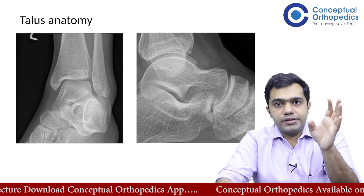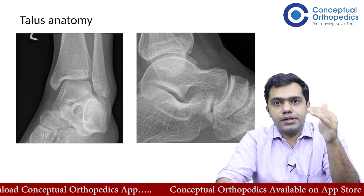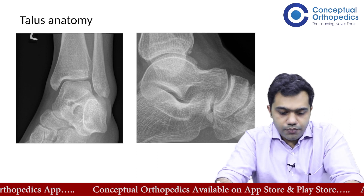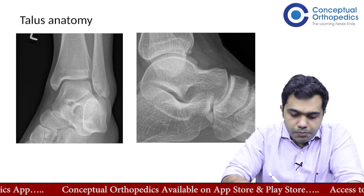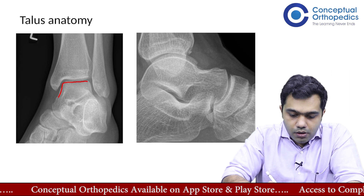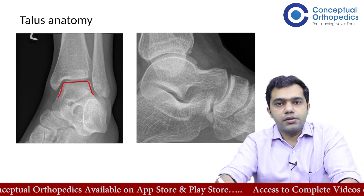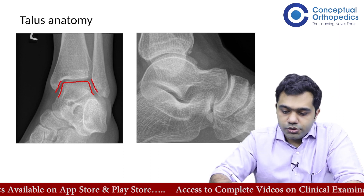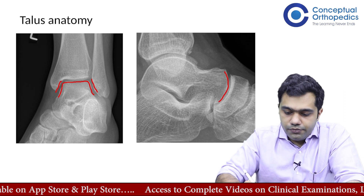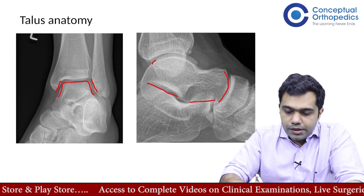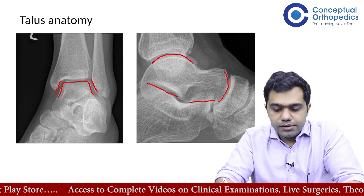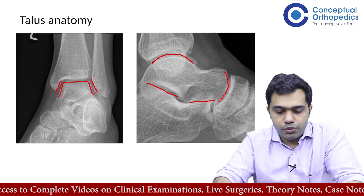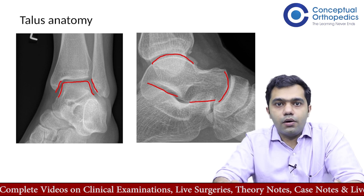If you look into the talus, you can see that it makes various joints with the tibia, with the navicular bone, and with the calcaneum. The talar dome makes the ankle joint, and on either side it provides articular surface for the lateral malleolus as well as the medial malleolus. Distally, inferiorly, and superiorly there are a lot of articular surfaces, leaving minimal bone exposed for blood to enter into the talus bone. This is the peculiarity of the talus.